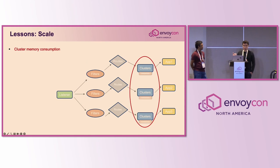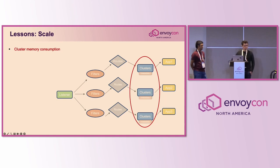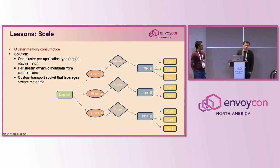Basic profiling quickly showed that clusters are the worst out of the bunch for scaling from a memory perspective. Just configuring another IP within the load balancing set of a cluster would significantly alter its memory footprint. In our memory-constrained environments, configuring 10 to 20,000 applications would quickly run us out of memory, which in a multi-tenant environment is not ideal.